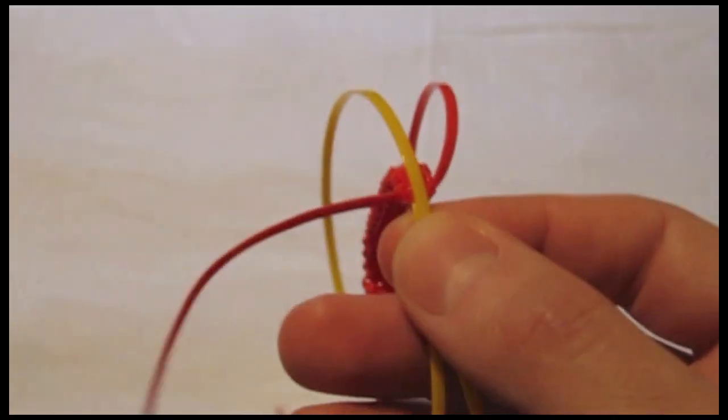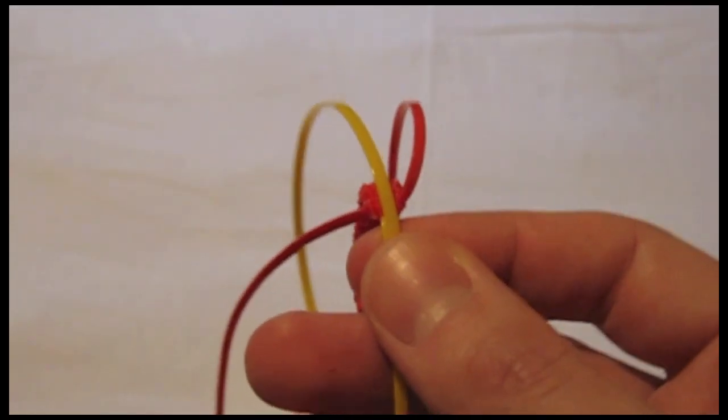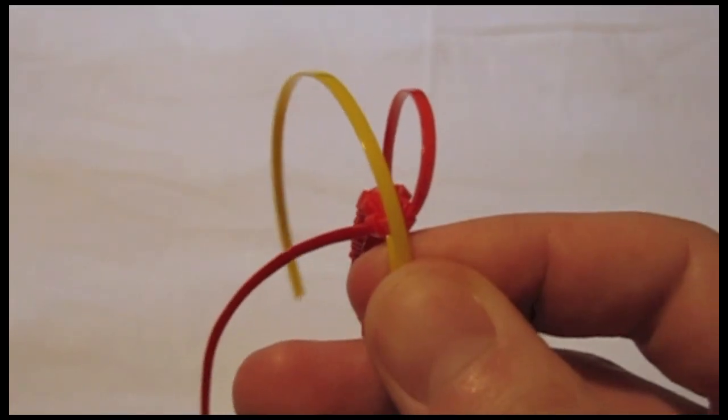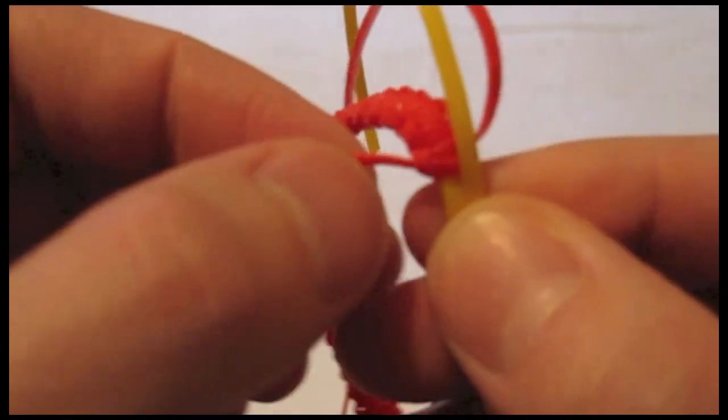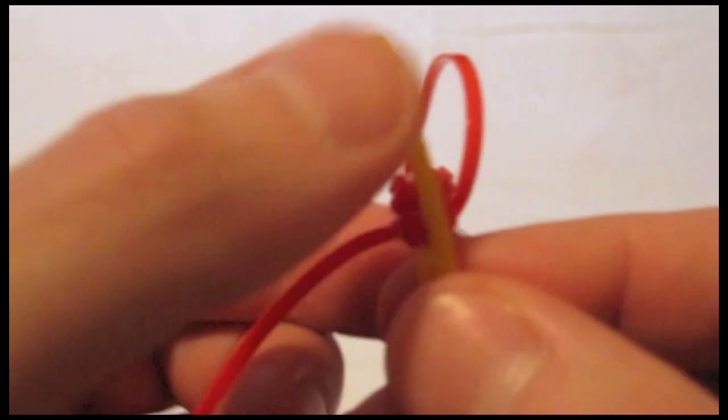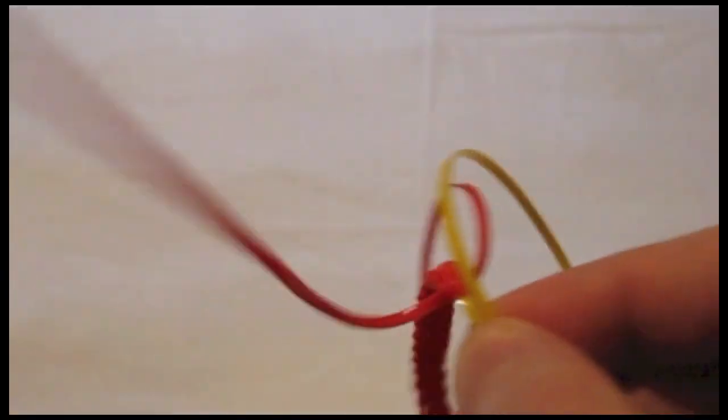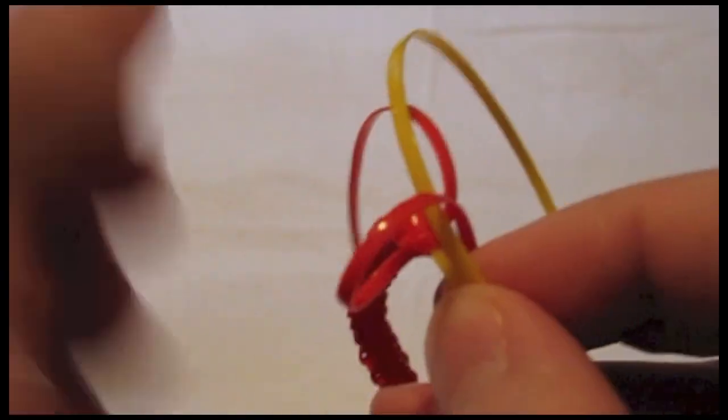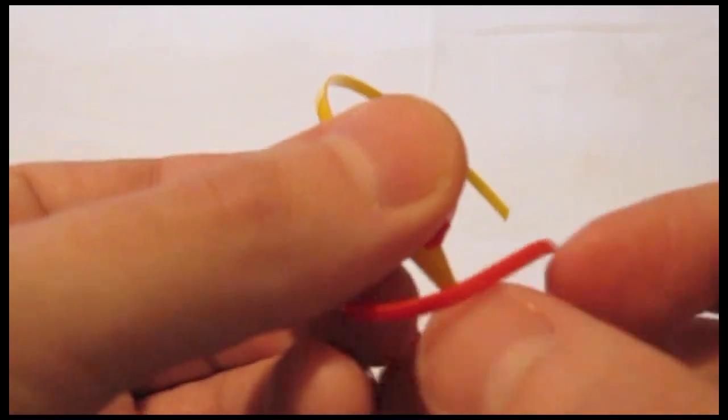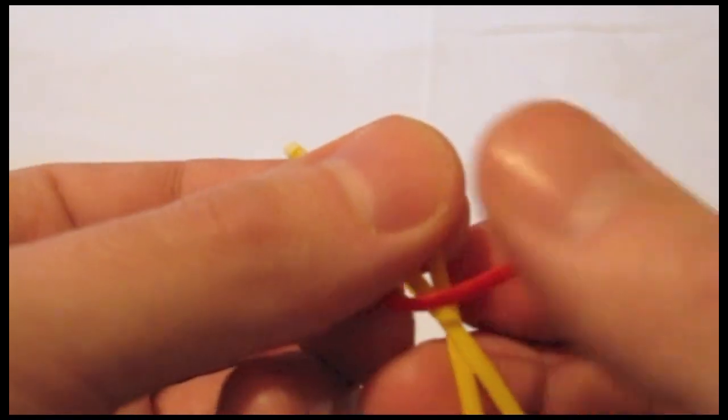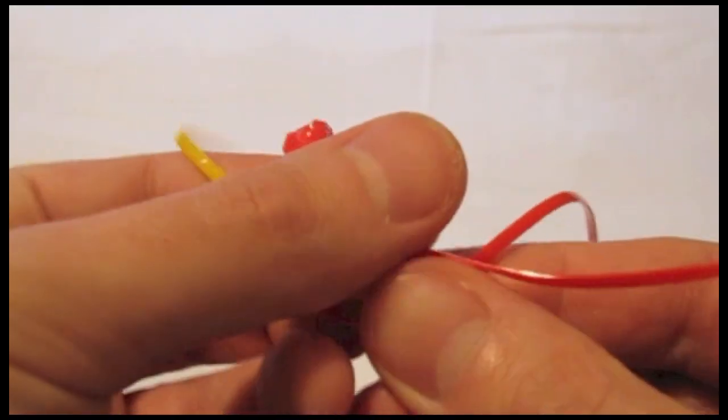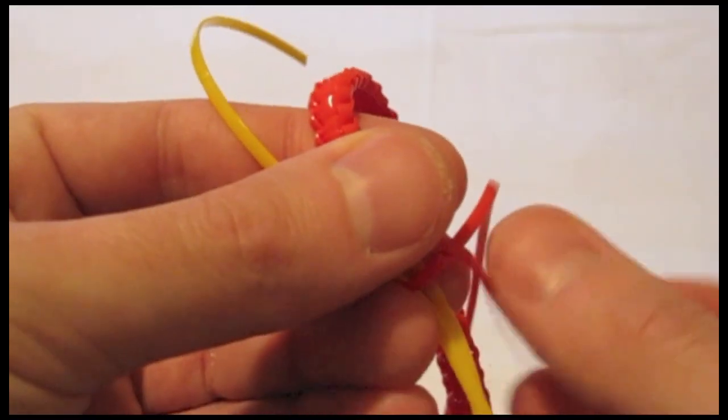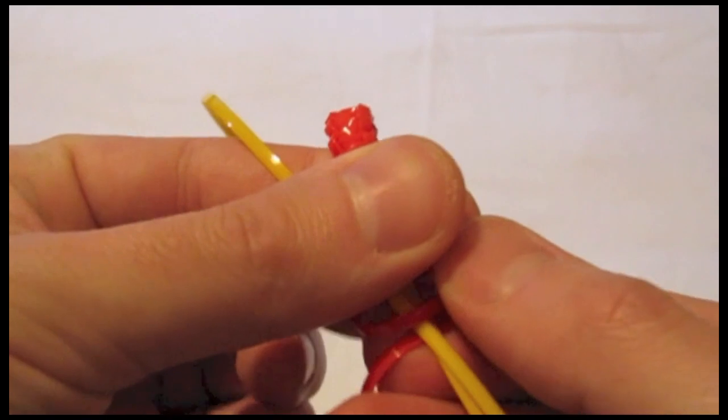Keep making cobra stitches like you were before, but now make them over both of these strands.